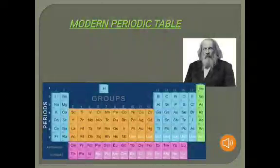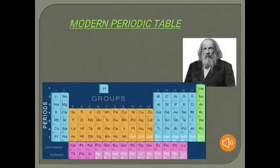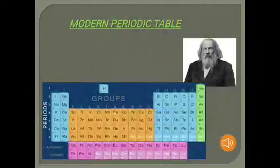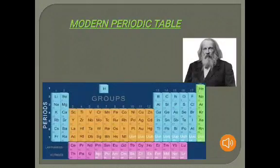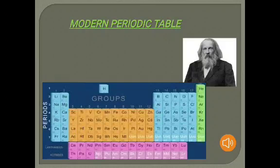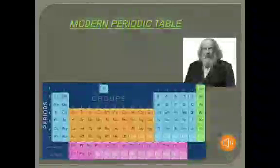Now we are coming to the atomic mass of an atom. What is atomic mass, or the mass number of an atom? It is basically the total number of protons and neutrons present in an atom together, and this is called the mass number of that particular atom.